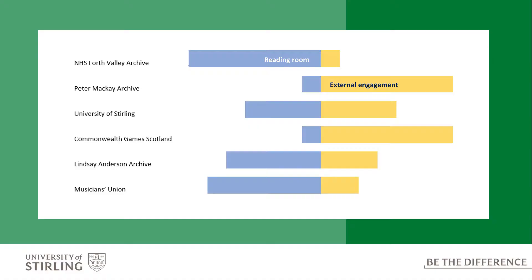In preparing for this talk, I tried to visualise how our most popular collections are used, illustrating the balance between physical use in the reading room and other ways of engaging with the collections outside the archive. Blue represents use in the reading room and yellow is outside the archive reading room. It was quite a useful exercise in mapping our current activity and our priorities.